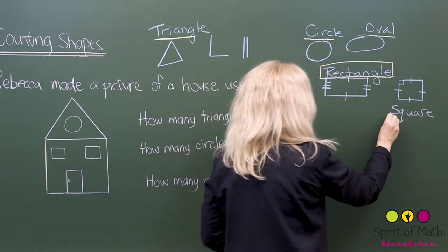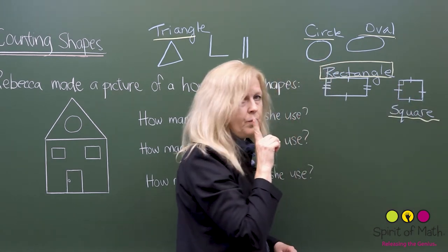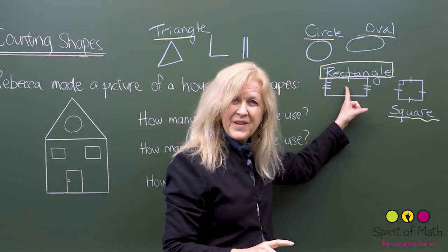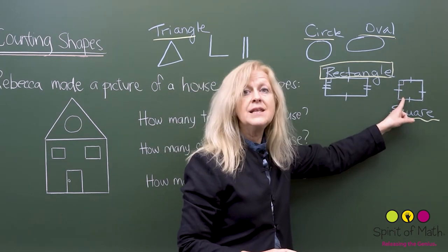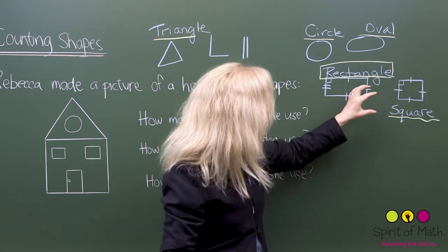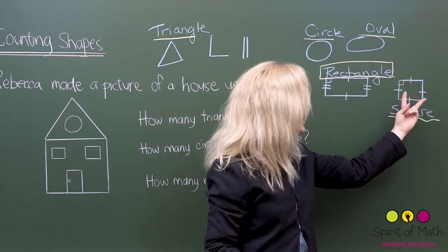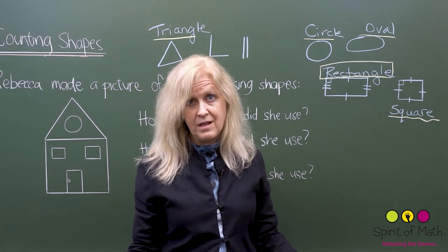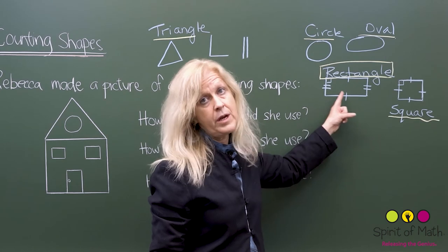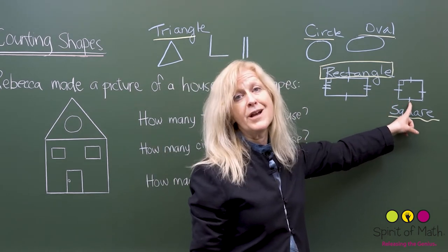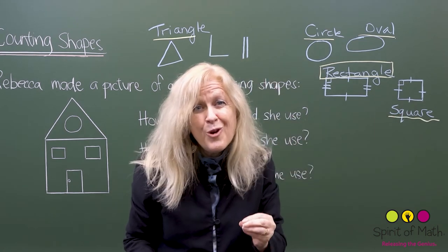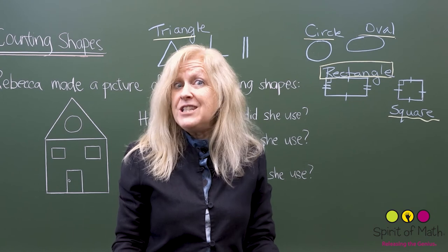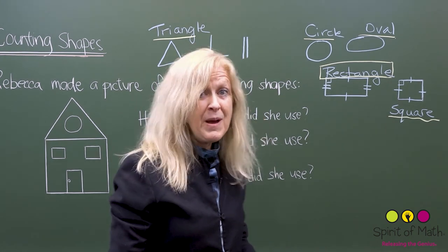So here's a question: is a square a rectangle? In a rectangle, the opposite sides have to be the same. In a square, these sides are the same and these are the same — so yes, a square is a rectangle. But a rectangle isn't always a square. The square is always a rectangle, but not every rectangle is a square. So remember that.